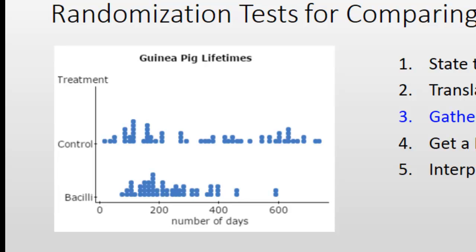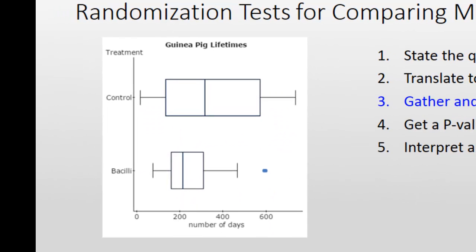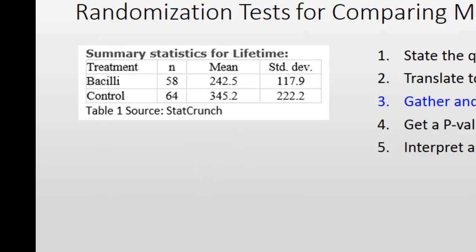It already seems like something different is going on. The bacilli group seems more clustered around 200 days with a pronounced right skew. The box plot makes the difference in spread even more dramatically evident by showing how much larger the IQR is, and also highlights those two outliers in the bacilli group. The means and standard deviations show the average lifespan in the control group was about 103 days longer, and the standard deviation was very nearly double in size — quite a difference.